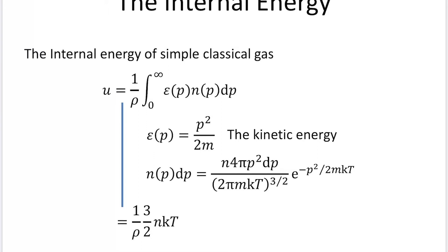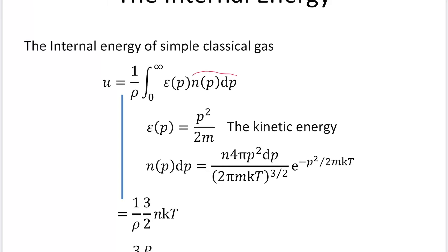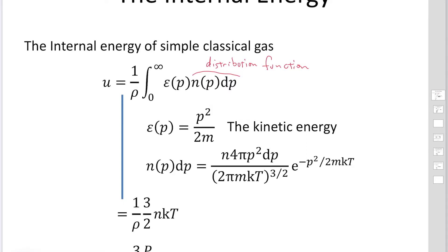The internal energy can be calculated as 1 over rho times the integration of epsilon and the distribution functions. You multiply the distribution function and find the average values. For epsilon, we only consider ions or electrons, so kinetic energy is expressed as p squared over 2m. For the case of classical gas, we use a Maxwell distribution.